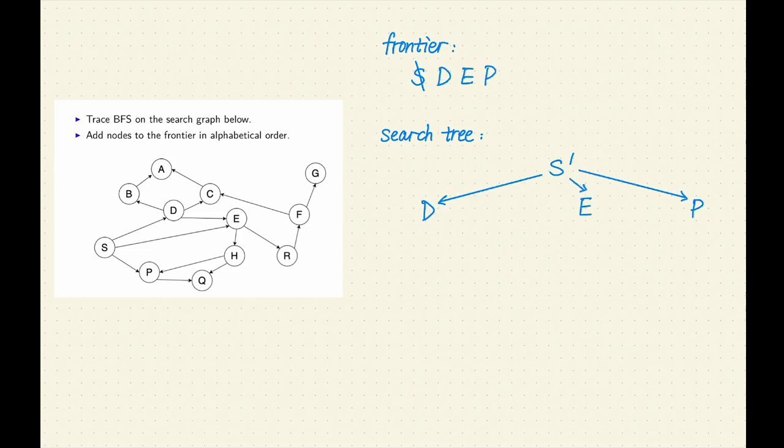Step 2. The oldest node added to the frontier was D. D is the second node expanded. Remove D from the frontier. E is not a goal. Let's expand D.